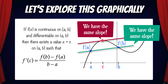Remember that the average rate of change is the average slope over an interval — in other words, it's the mean slope of a function over an interval. So the mean value theorem finds us the x value on the function where the slope of the tangent line is equivalent to that mean slope.